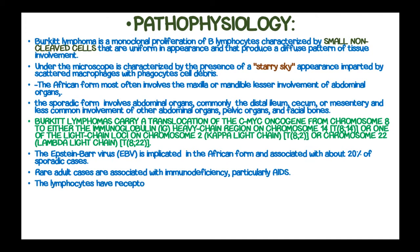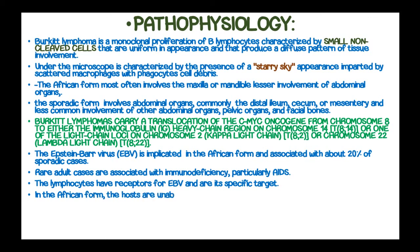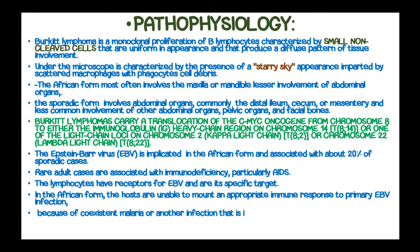Lymphocytes have receptors for Epstein-Barr virus and are its specific target. In the African form, the host is unable to mount an appropriate immune response to the primary Epstein-Barr virus infection because of a co-existent malaria or other immunosuppressive infection in these individuals.